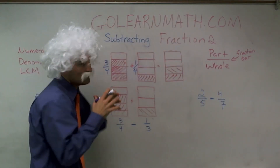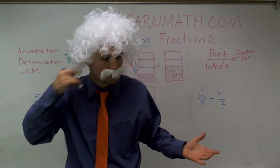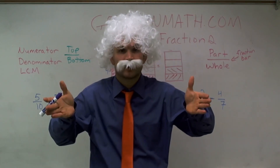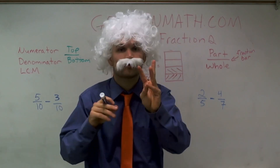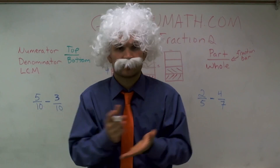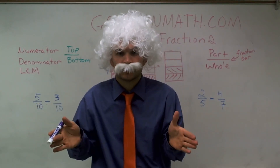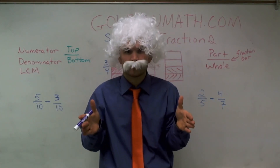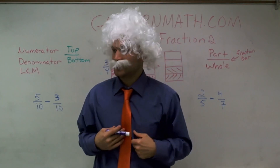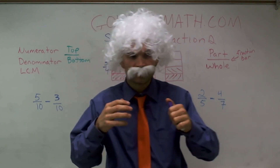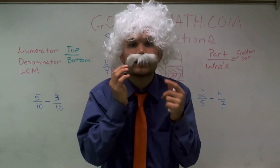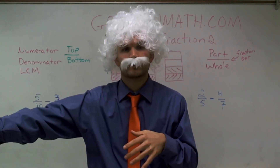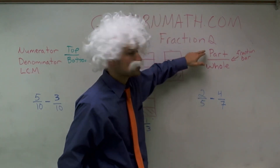I want to show you how to subtract fractions. The first thing we need to know is: what is a fraction? Well, if you have something whole — and I always like to think of a candy bar, because I'm always hungry — if I divide that candy bar, let's say I have three friends including me that I want to divide it for, so I divide it into four different pieces. What I've just created is some parts out of a whole. So if a whole candy bar is divided into four parts, I have four parts over a whole. Let's say I want to keep three of those parts and only give one to a friend. So I've given away one-fourth, and now I have three parts out of the whole — three-fourths.